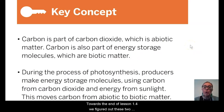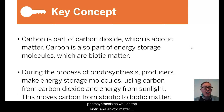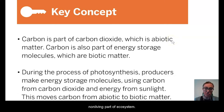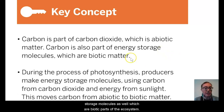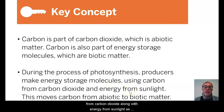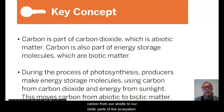Towards the end of lesson 1.4, we figured out two important key concepts about photosynthesis, as well as the biotic and the abiotic matter within the ecosystem involved in this process. We determined that carbon, which is a type of atom, is a part of carbon dioxide in the air, which is an abiotic or non-living part of the ecosystem. We also determined that carbon is a part of the energy storage molecules as well, which are biotic parts of the ecosystem. It's during photosynthesis where producers or plants make these energy storage molecules using carbon from carbon dioxide along with energy from sunlight and water, moving carbon from the abiotic to the biotic parts of the ecosystem.